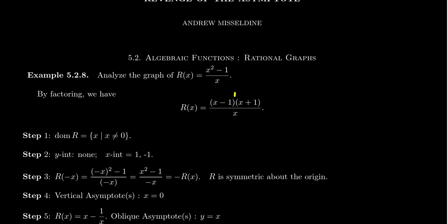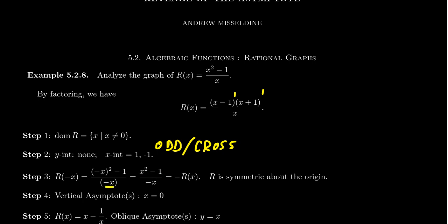Notice their multiplicities — both show up an odd number of times in the numerator, so they both have odd multiplicities, which means at these points we will cross the x-axis. If you check for symmetry, plugging in -x gives (-x)² - 1 in the numerator, which equals x² - 1, and -x in the denominator. Factoring out the negative gives -r(x), suggesting our function is an odd function — symmetric with respect to the origin. These redundancies help us double-check our work.